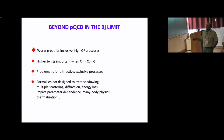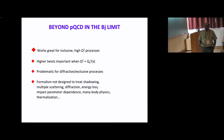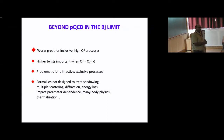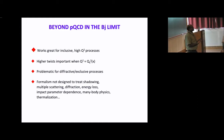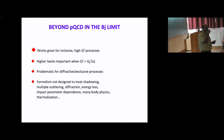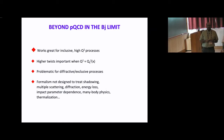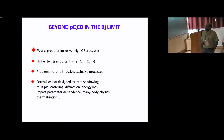The Bjorken formalism is not designed to treat shadowing, multiple scattering, diffraction, energy loss, impact parameter dependence, or any kind of many-body physics — including thermalization. For heavy-ion collisions where you want to understand thermalization, the Bjorken limit is really a straightjacket rather than a liberator. It's not designed to address issues with lots of scattering or more differential quantities.